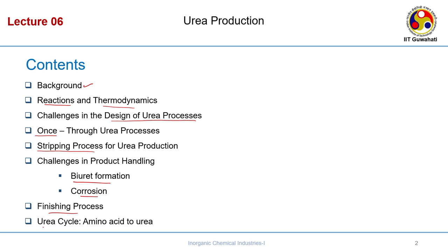We will also briefly discuss the urea cycle in our body. In our body we also synthesize urea because we have some ammonia due to the production of certain enzymes. That ammonia is converted to urea and excreted from the human body — the primary organ responsible is the liver, which converts this ammonia to urea.